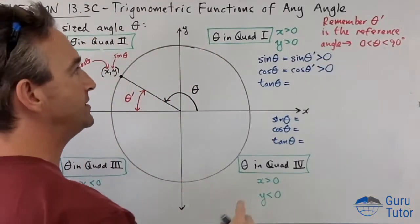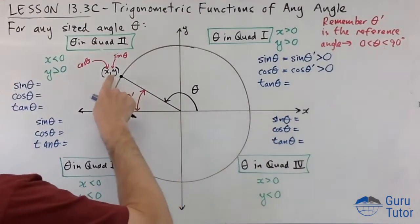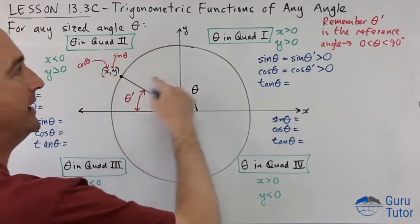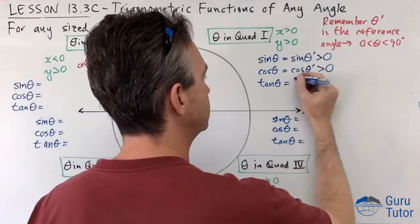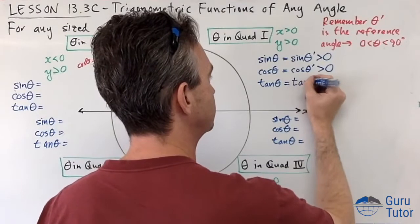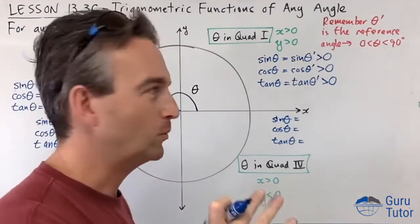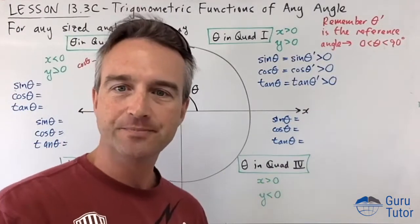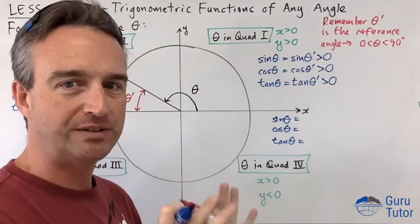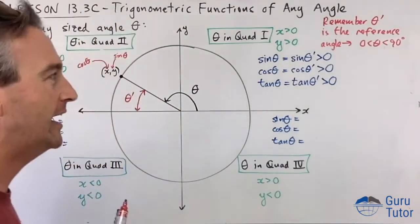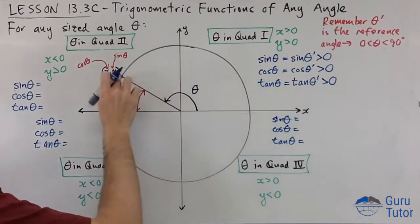Tan theta in the first quadrant is always y divided by x. Both x and y are positive, so positive divided by positive gives a positive result. This might seem complex right now, but once we do examples it will become very clear. Now let's move to the second quadrant.